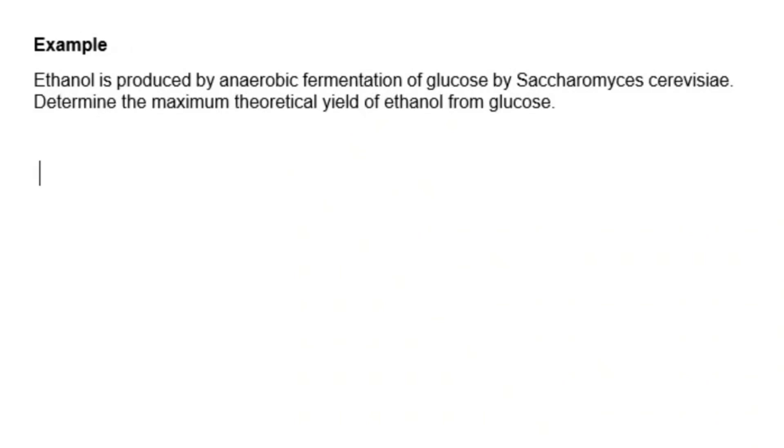Hi there and welcome back. Let us look at this example. We are told that ethanol is produced by anaerobic fermentation of glucose by Saccharomyces cerevisiae. Determine the maximum theoretical yield of ethanol from glucose.